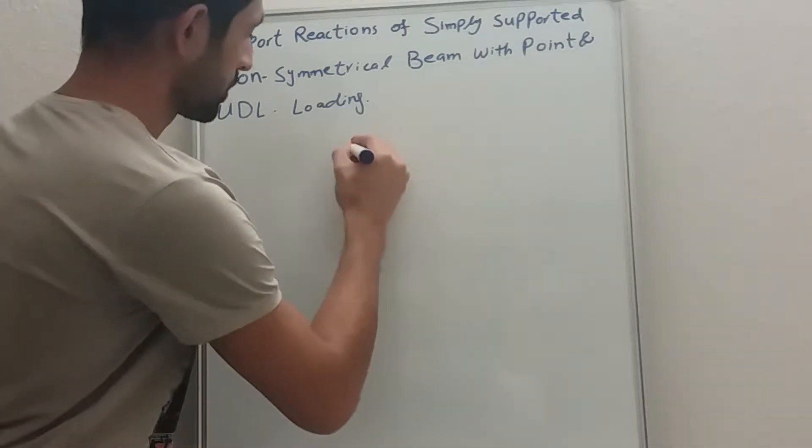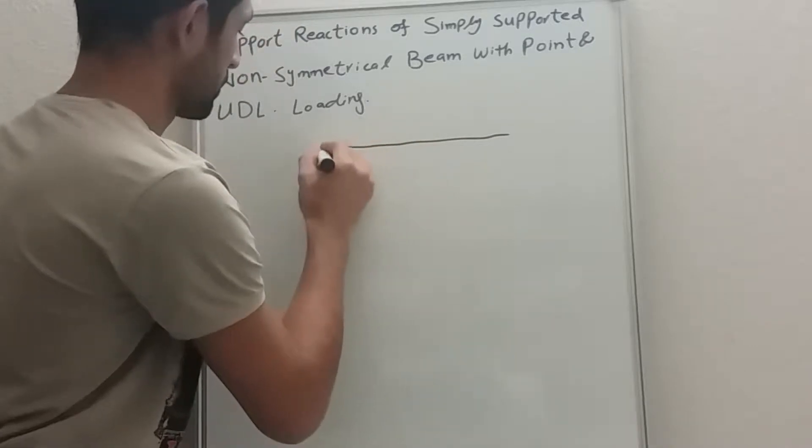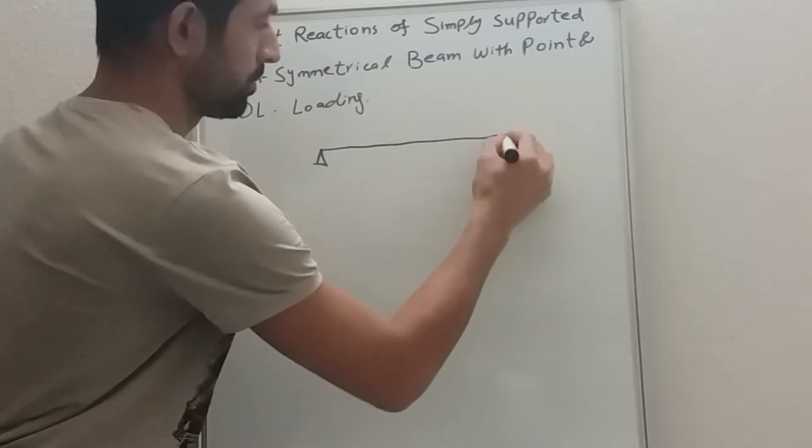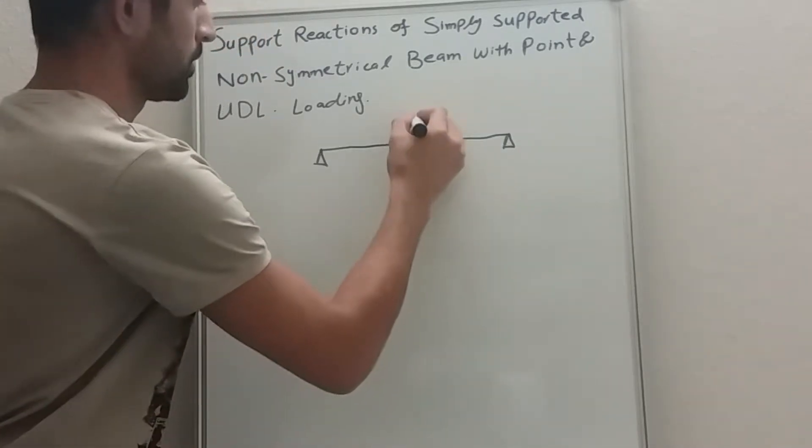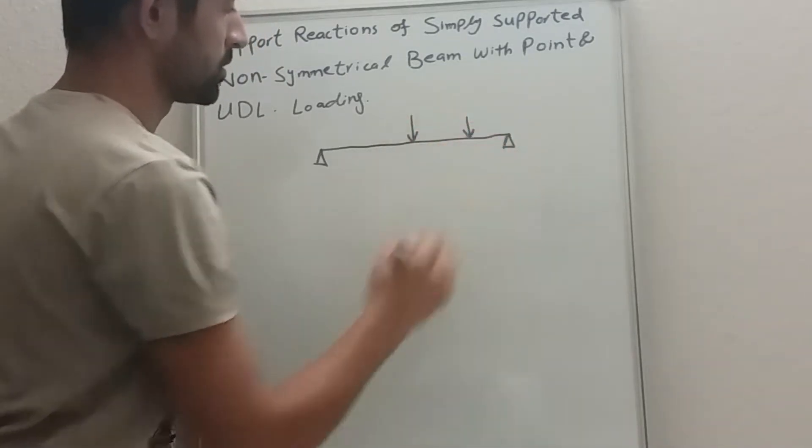So here I'm going to make a diagram. Let's say we have a simply supported beam. We have loading in here and another load is here.